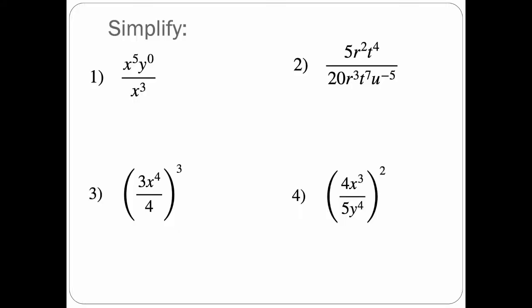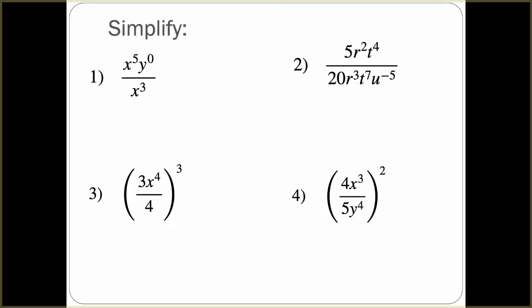Here we have four problems. It says to simplify. We have x to the fifth, y to the zero over x cubed. Since we have both x in the numerator and denominator, we would have x to the 5 minus 3, subtracting the exponents. And y to the zero just goes to 1 — anything raised to the zero power, remember from yesterday, goes to 1. This just becomes x squared.